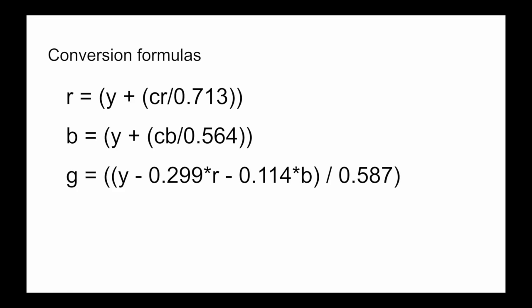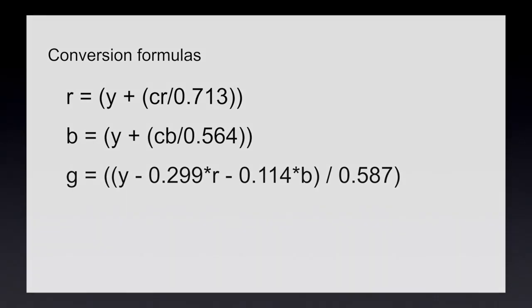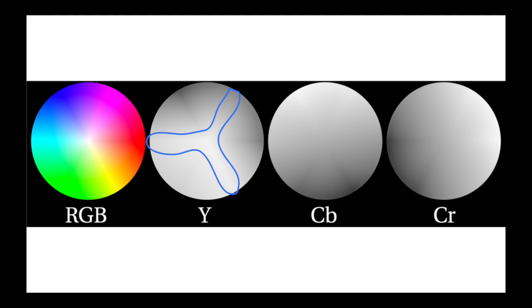Similarly, chrominance red, calculated by this very similar formula, is the same thing but for the red color. Here is an example of converting an RGB color wheel to YCbCr. You can see that the Y channel is brightest in the area outlined in blue, which is just what we'd expect, since that's where white is in the color wheel. Meanwhile, the Cb channel is brightest at the originally blue area, and gets progressively dimmer everywhere else, just like the Cr channel with the originally red area.